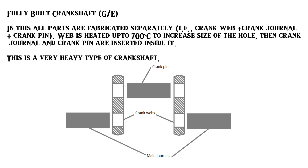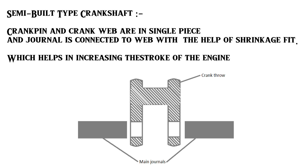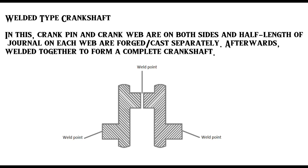In the fully built crankshaft, all parts are fabricated separately. The web is heated up to 700 degrees centigrade to increase the size of the hole, then the crank journal and crank pin are inserted into it. This is a very heavy type used in auxiliary engines. In the semi-built crankshaft, the crank pin and crank web are in a single piece, and the journal is connected to the web with a shrink fit, which helps increase the stroke of the engine. This type is used in main engines.